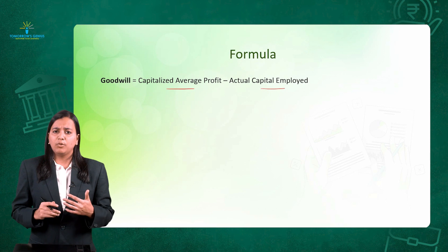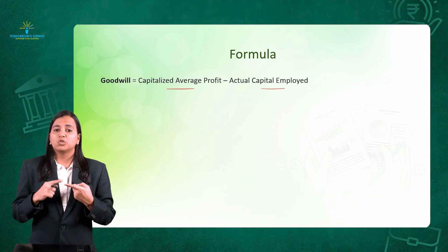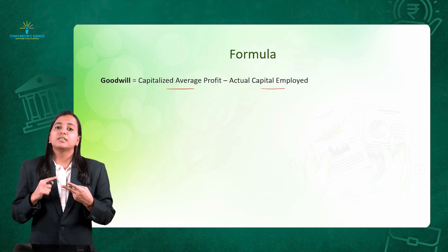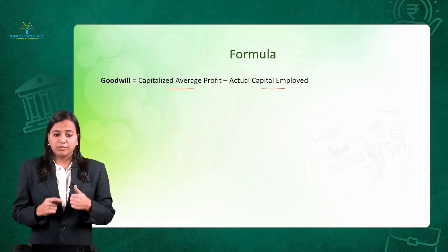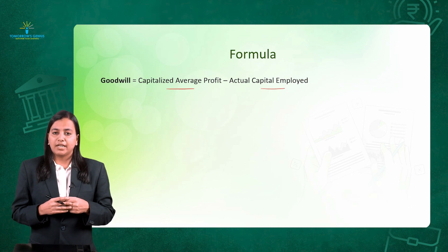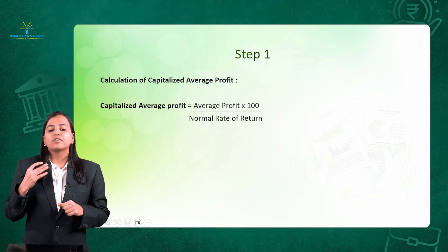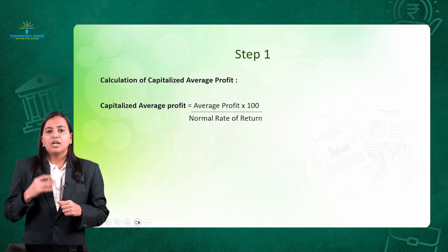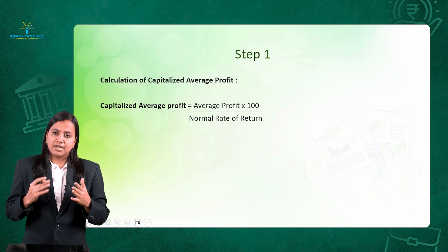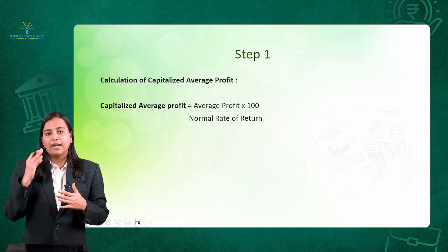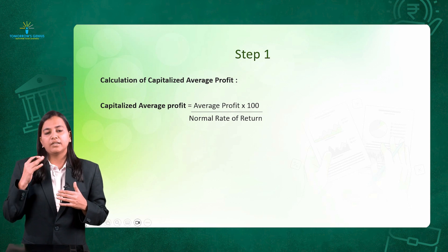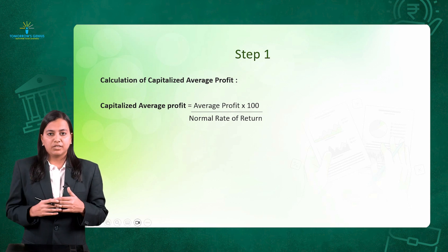The actual capital employed you already know — we studied it when we covered the Super Profit Method and the Annuity Method. Now, what does Capitalized Average Profit mean? Step number 1: Calculation of Capitalized Average Profit. It is calculated as: Average Profit × 100 ÷ Normal Rate of Return.